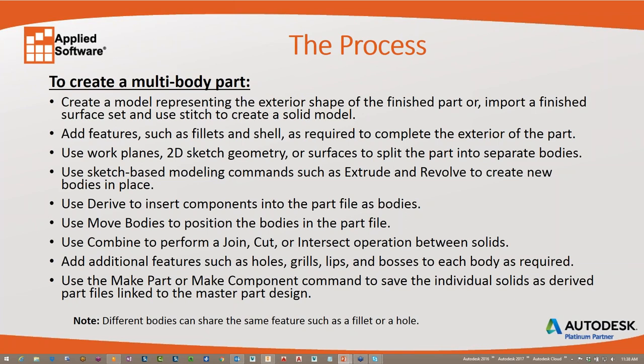What we're going to look at today is some more simplistic models and how this still benefits you. Once you've got the main shape, you'll add features such as fillets and shell. You use work planes, 2D sketch geometry, or surfaces to split the part into separate bodies. You can create the model as a single solid and then use the split command to separate it into separate bodies.